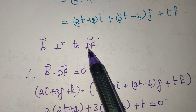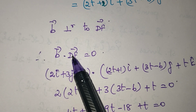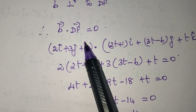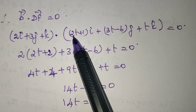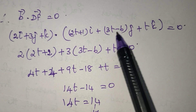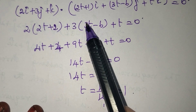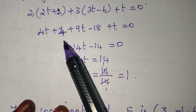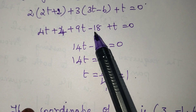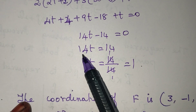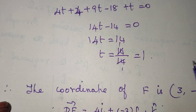The DF vector is perpendicular to the direction vector. If two vectors are perpendicular, their dot product equals 0. So DF · direction = 0: 2(2t + 2) + 3(3t - 6) + 1(t) = 0, giving 4t + 4 + 9t - 18 + t = 0, so 14t - 14 = 0, therefore t = 1.